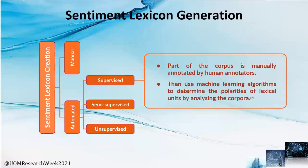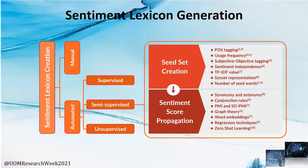In the supervised approach, a manually annotated training set is needed, and this training set should be large enough to get better performance. Using that training set, a machine learning model or neural network is trained to predict the sentiment score of unseen words. In the semi-supervised approach, one technique is to use usage frequency to create a seed set and label propagation to expand the lexicon. Expanding a foundation word graph with the help of beam search is also tested. Another technique is to expand a seed set by calculating similarities between each word in the corpus and the seed set using TF-IDF or SOPI-MI algorithms.